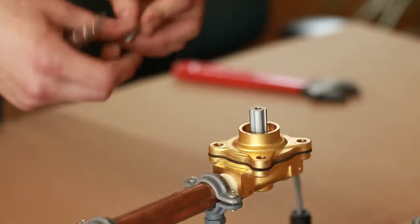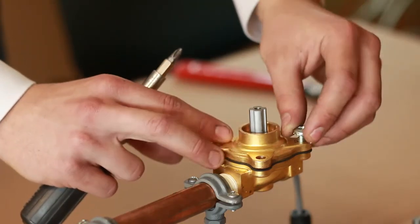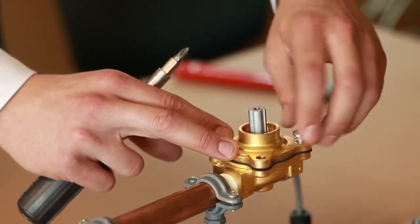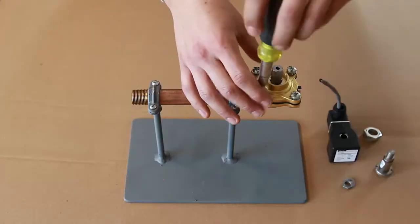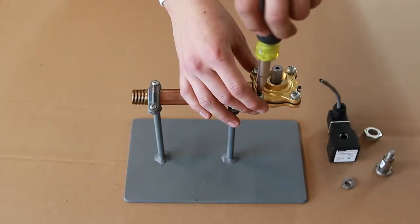Secure the cover to the body using the four Phillips head screws. Tighten the screws with a torque of 65 to 85 inch pounds.